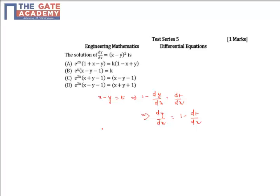Now I will substitute this in the given equation. So dy by dx means 1 minus dt by dx is equal to x minus y, I will take it as t. So this is t square. This implies 1 minus t square is equal to dt by dx.